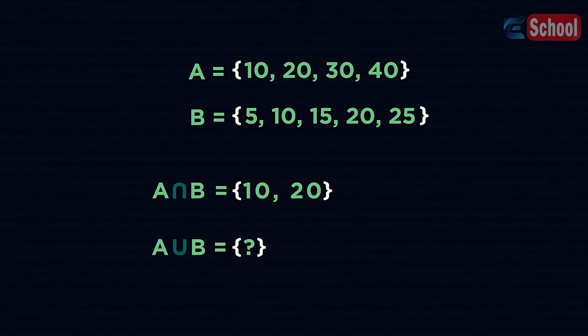For A union B, we are looking for values in either. Pause and try for yourself. The values 10 and 20 appear in each set, but only need to appear once in the union set, so A union B should look like this.